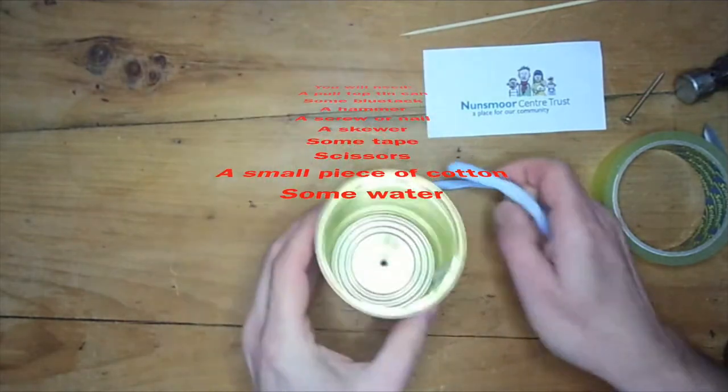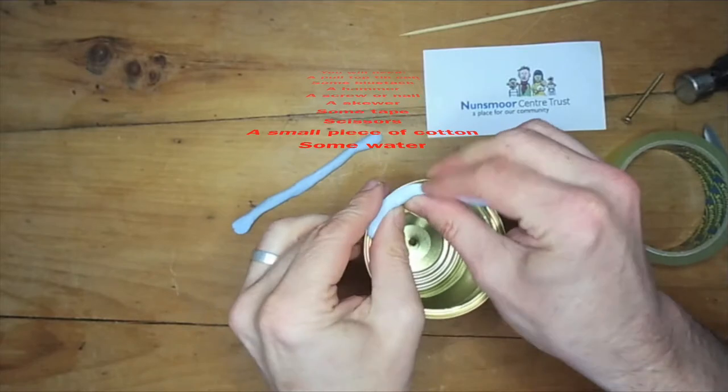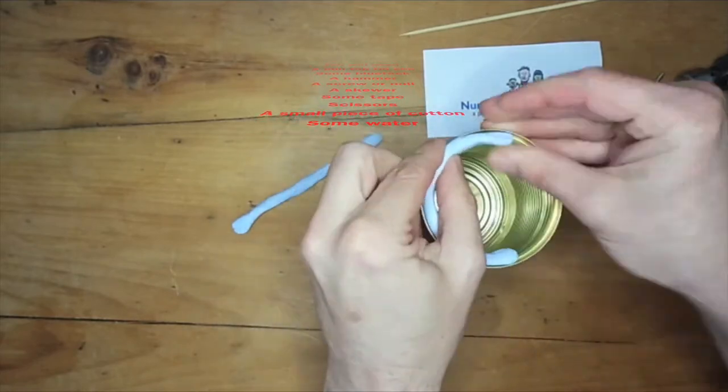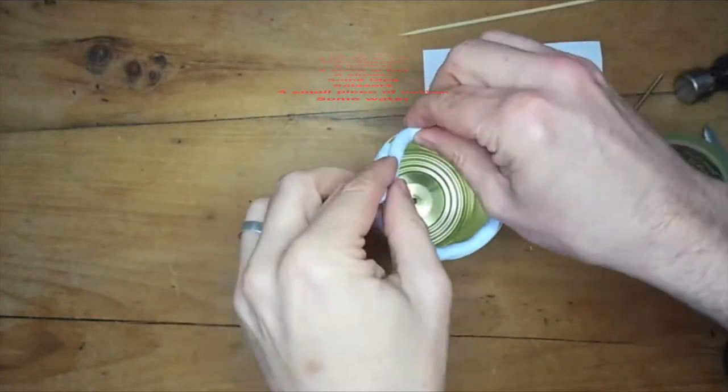First, roll out some blue tack about the same size as your little finger. Carefully press into the inside edge of the can and fold over the edge.